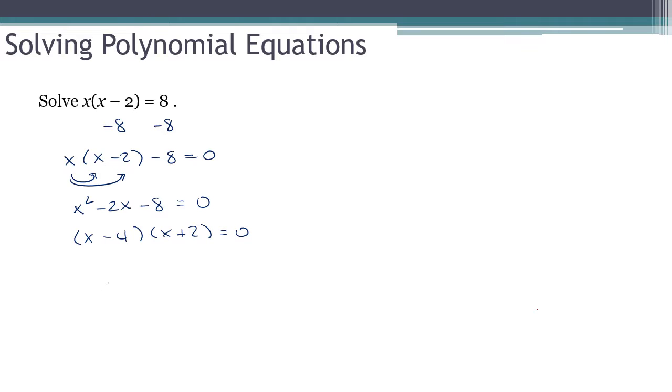And yes, that is a zero product rule situation. Now, either x minus 4 equals zero, which gives me x equals 4, or x plus 2 equals zero, which gives me x equals minus 2. And there you go. I got two answers, just like we've seen happen in previous examples.